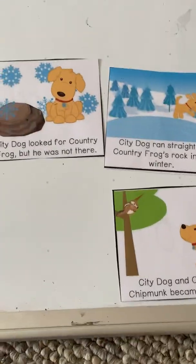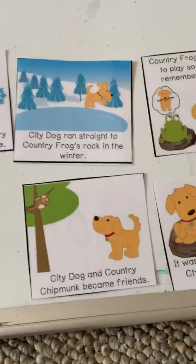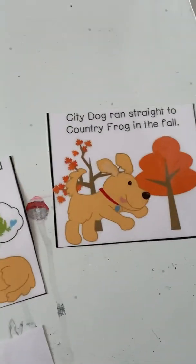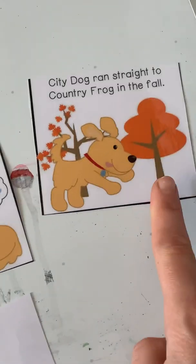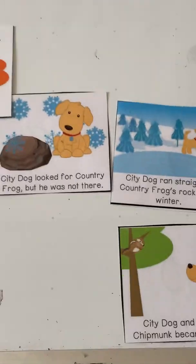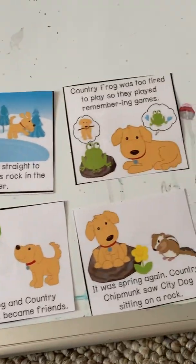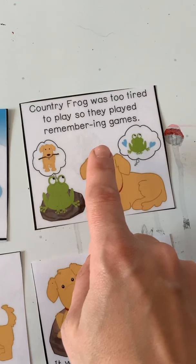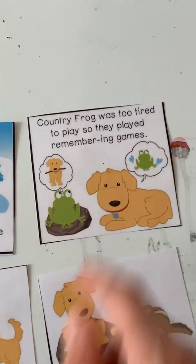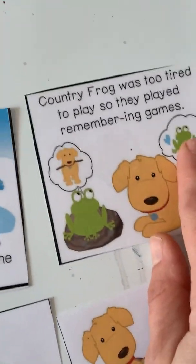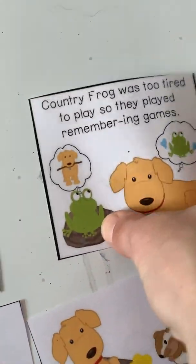So after summer, what happened next? We have spring, summer, fall. City Dog ran straight to Country Frog in the fall. What happened in the fall? Country Frog was too tired to play, so they played remembering games. They thought about the spring and the summer because he was so tired.